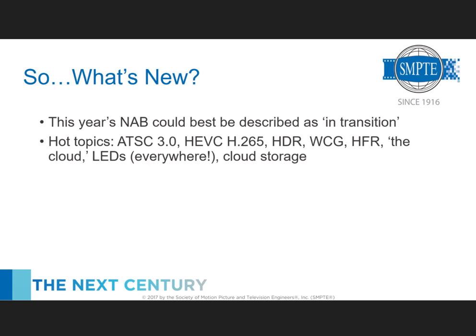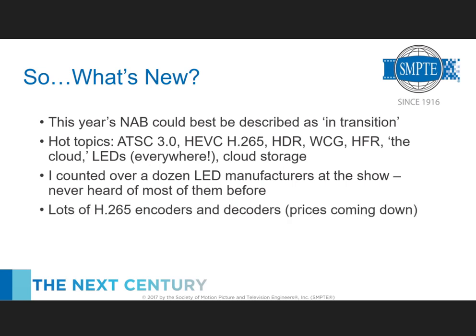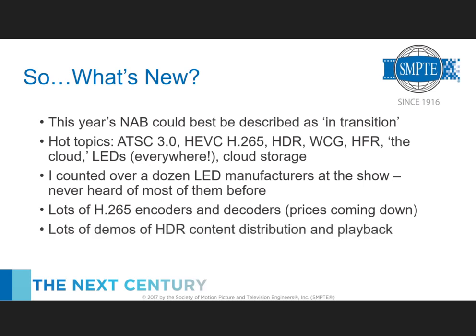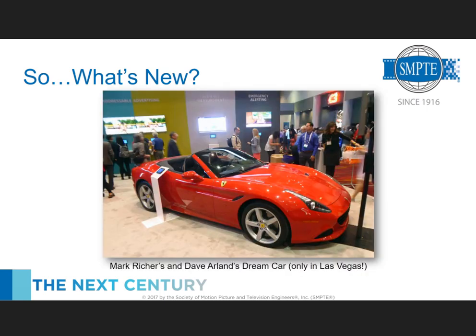Hot topics this year: ATSC 3.0, H.265 encoding and decoding, high dynamic range, wide color gamut, high frame rate, ubiquitous LEDs — which might have been the biggest thing at the show with over a dozen manufacturers mostly from China trying to break into the US market — and cloud storage and playback of media assets. Lots of H.265 encoders and decoders with prices slowly starting to come down. Lots of HDR content distribution and playback demos — very hot topic. And there was a gorgeous Ferrari California in the ATSC exhibit.